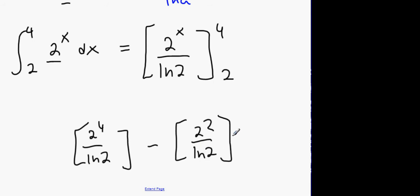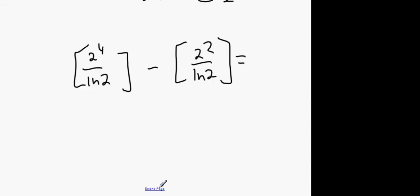We can put all of that into the calculator. We're going to get 16 over ln 2, all over 4 ln 2. And that will make 12 over ln 2. 16 minus 4 is 12. Because they have the same denominator.